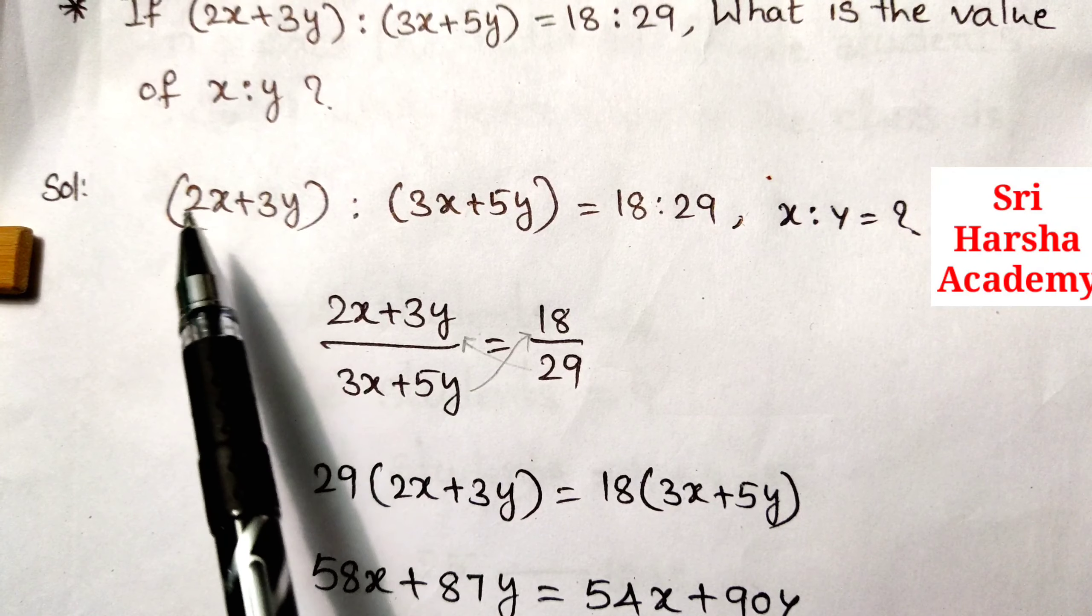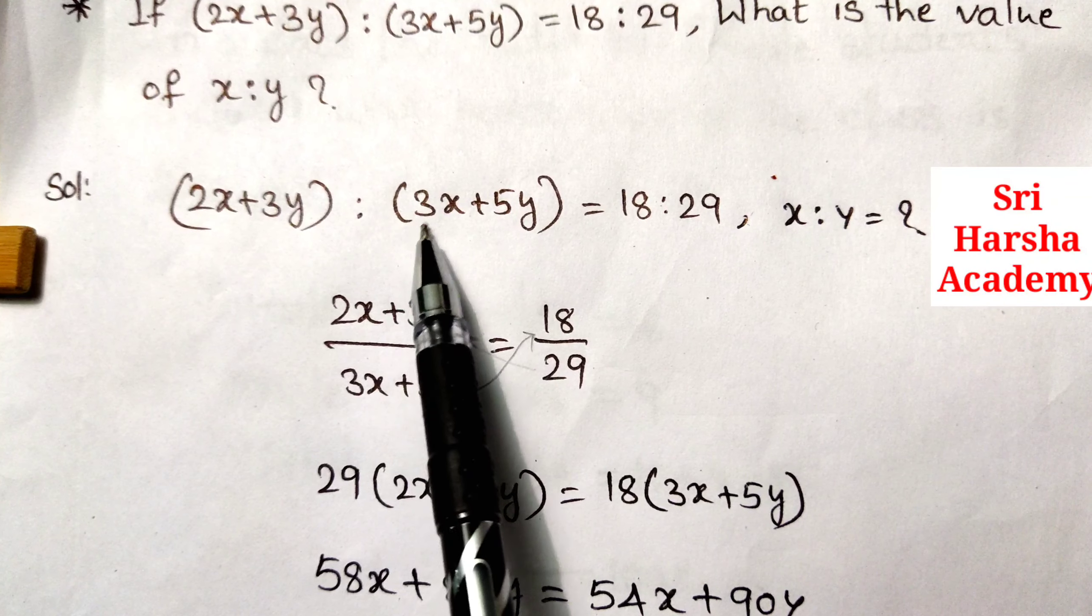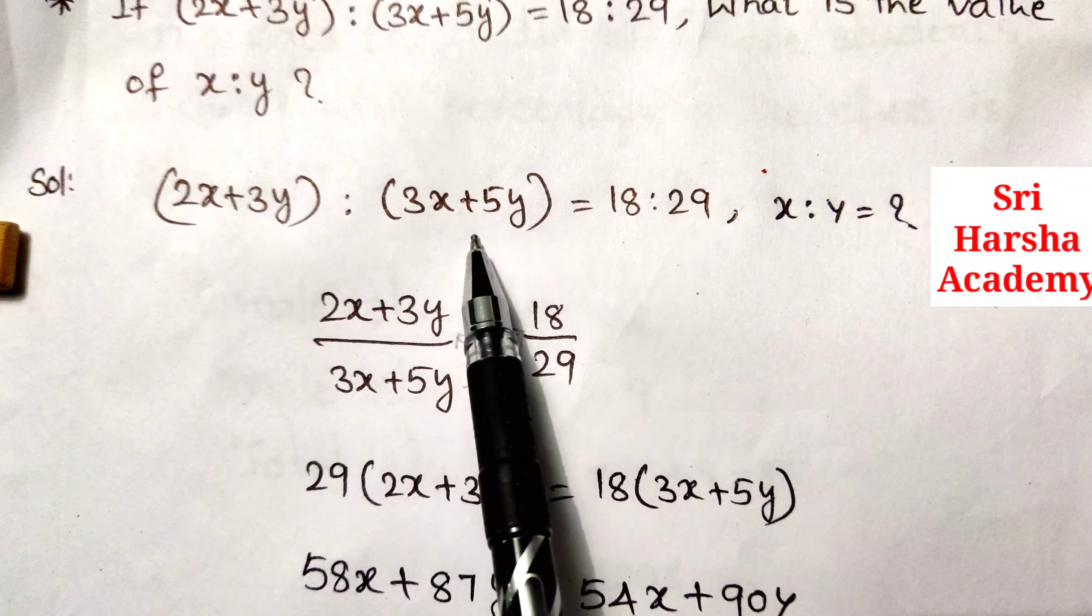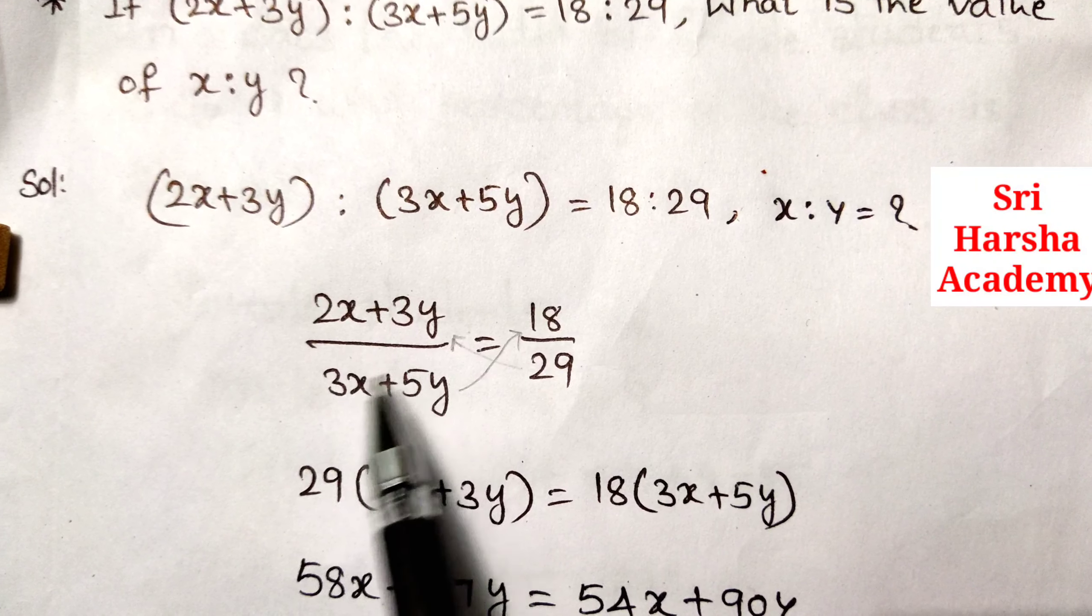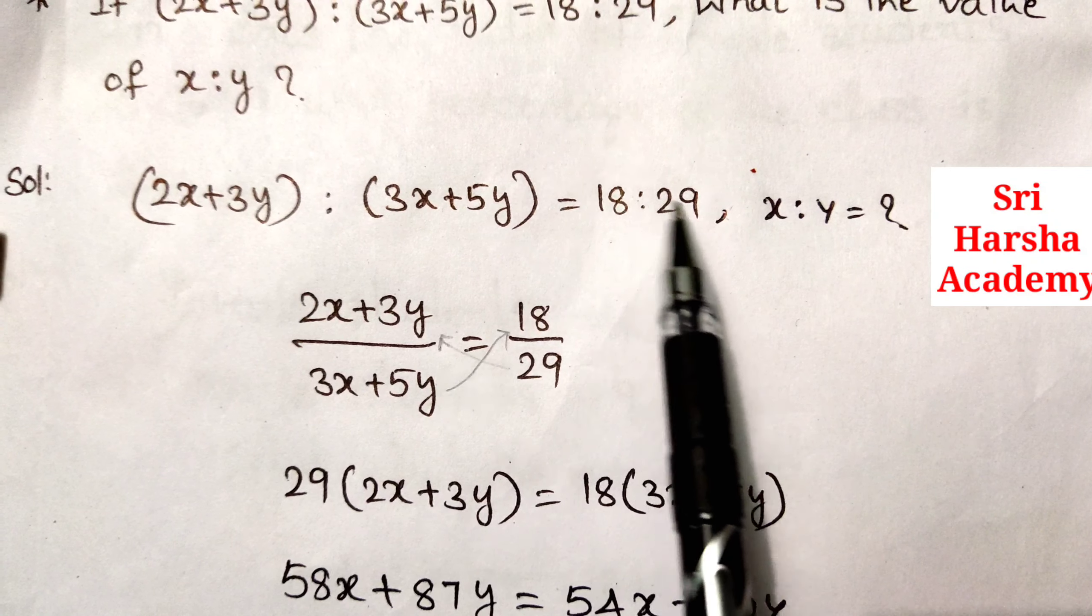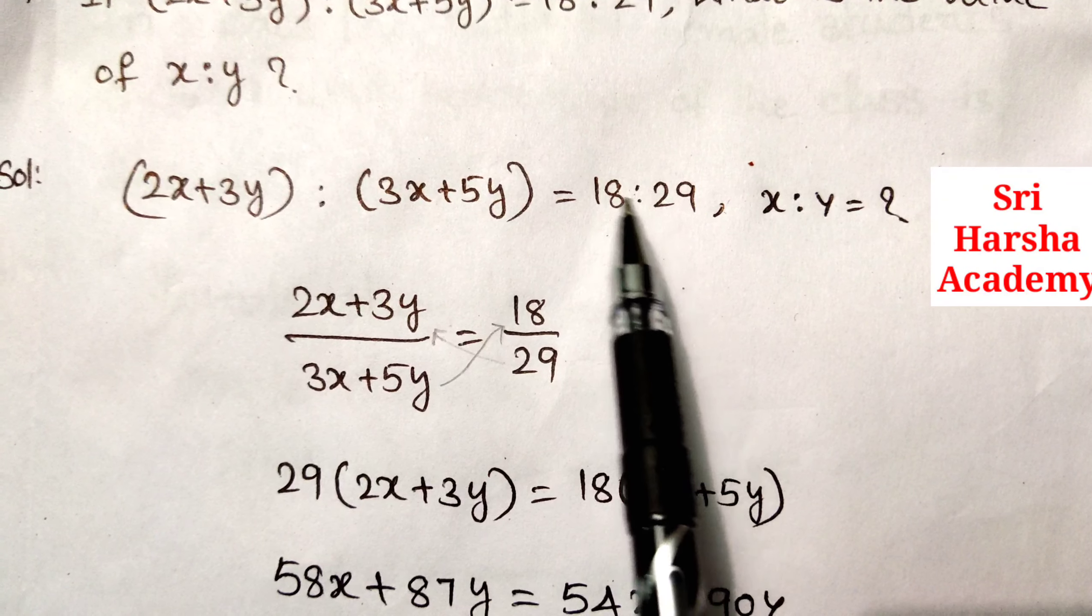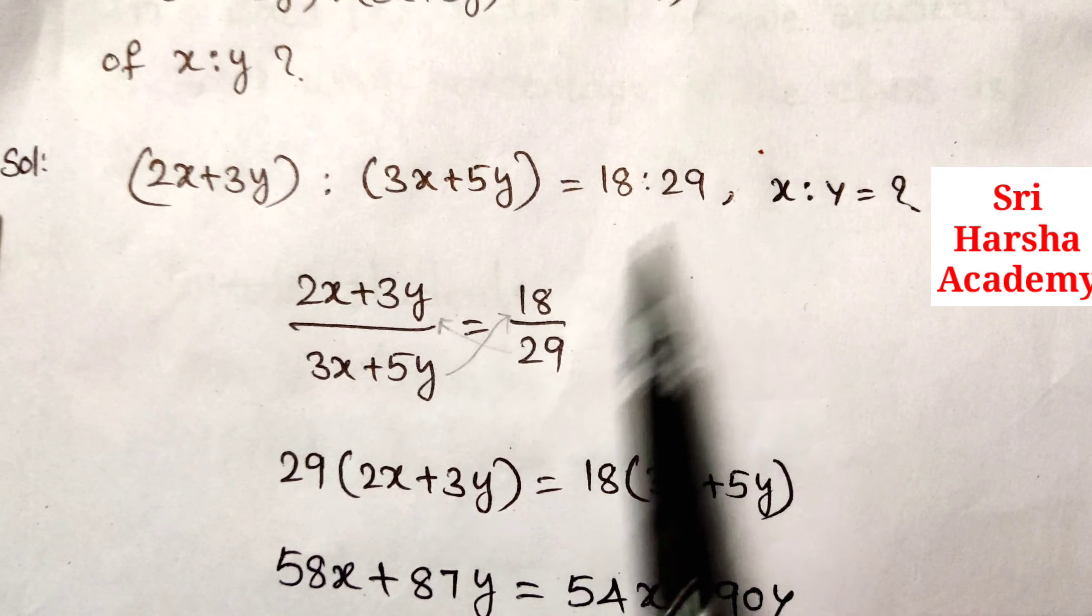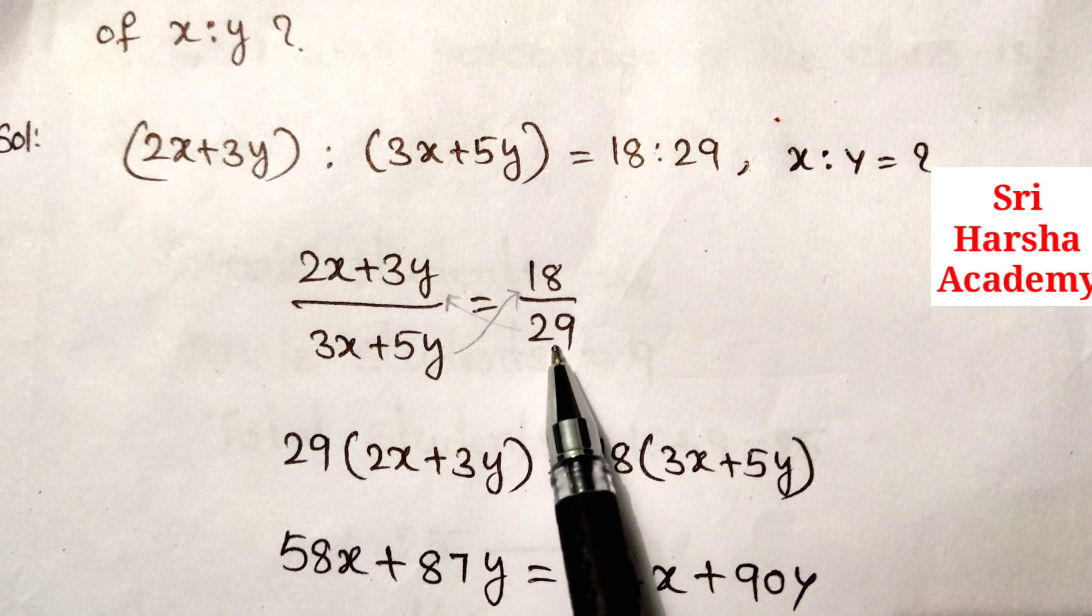Here, 2x plus 3y is to 3x plus 5y, it can be written as 2x plus 3y by 3x plus 5y is equal to 18 is to 29, it can be written as 18 by 29. By cross multiplication,